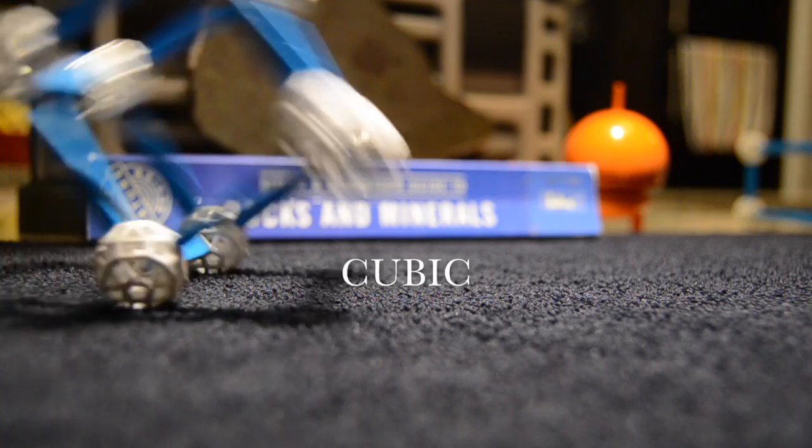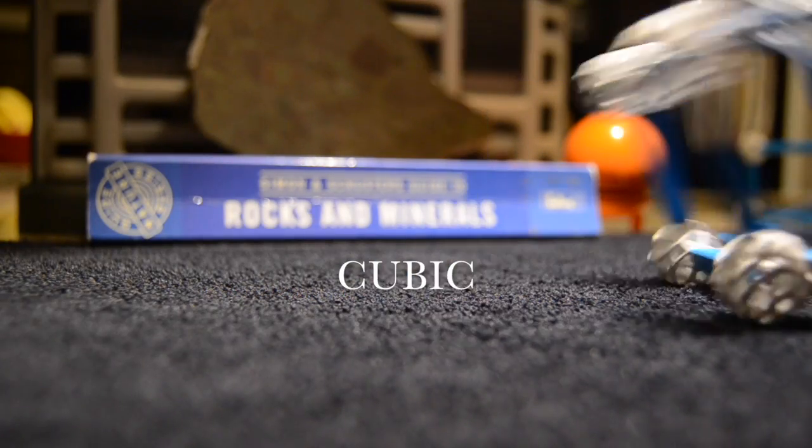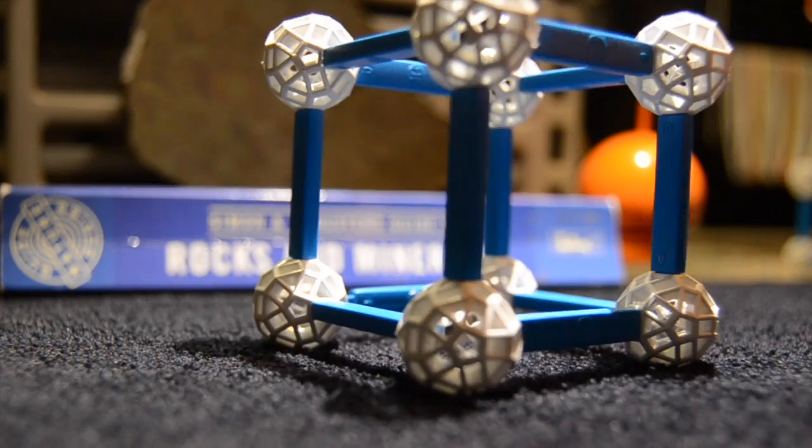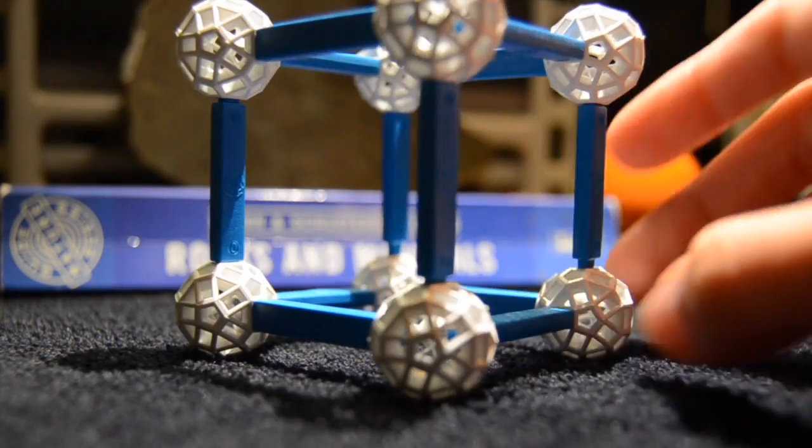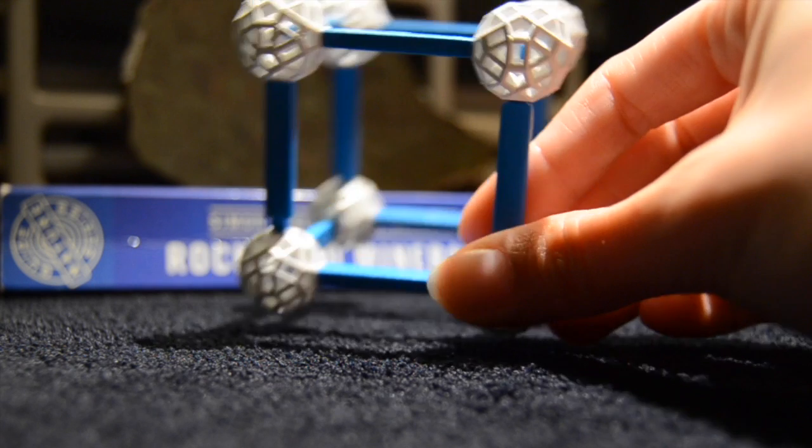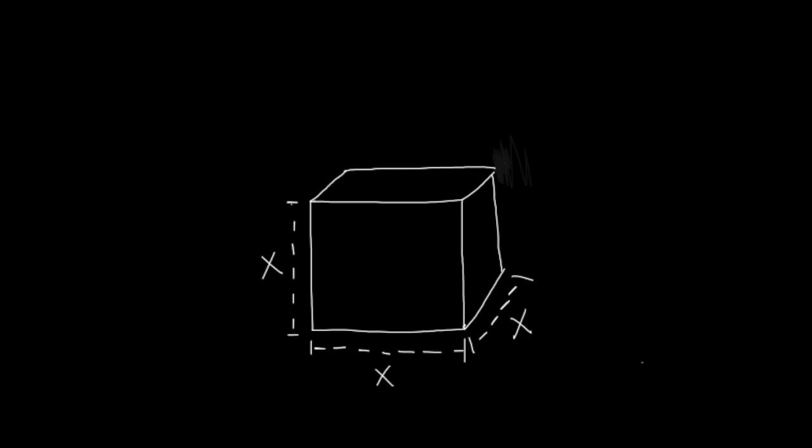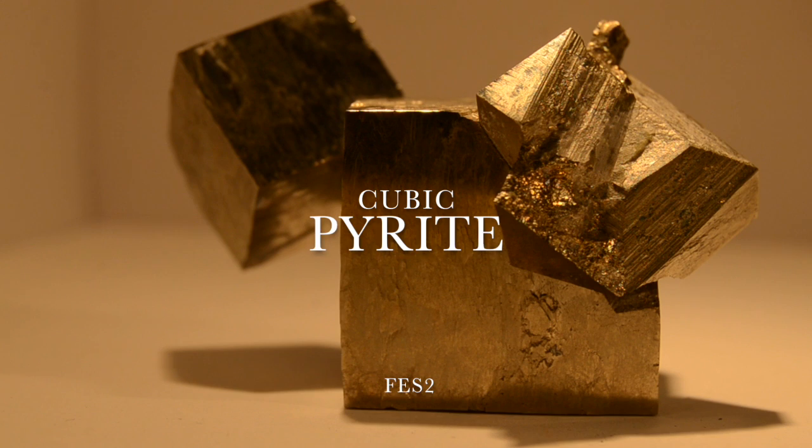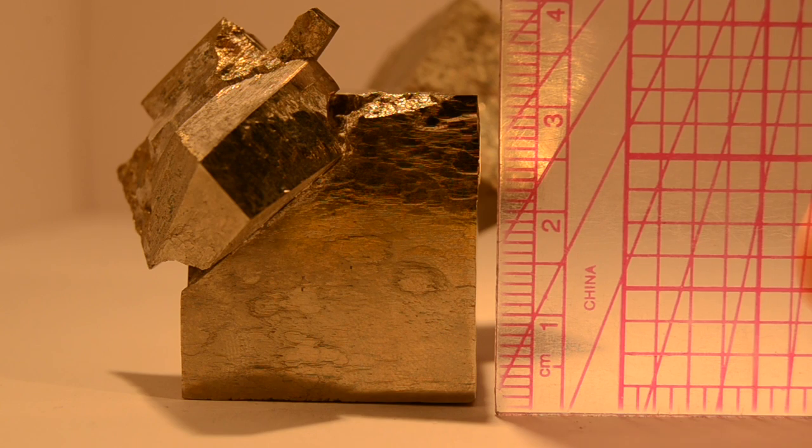The cubic system has three equal axes and equal angles between each axis. Imagine a box with all equal sides. If you were to wrap it, it kind of looks like a gift. Pyrite is an example of a mineral that belongs to the cubic system.